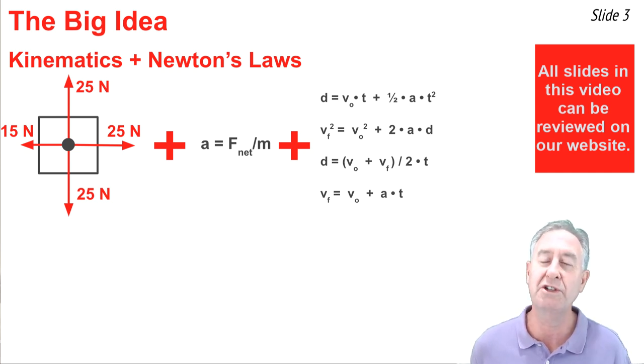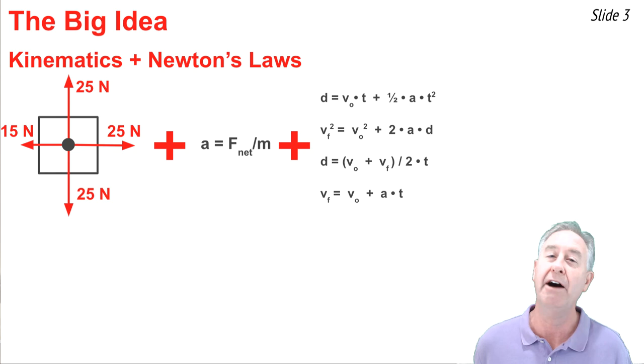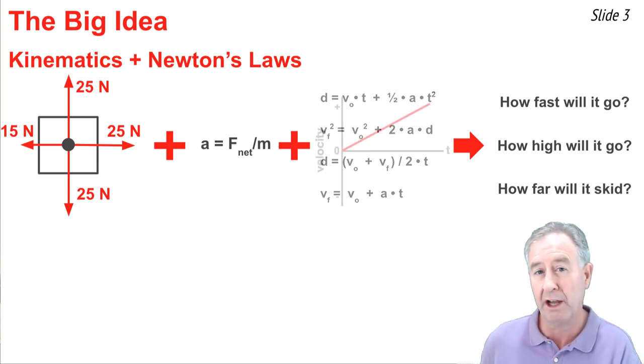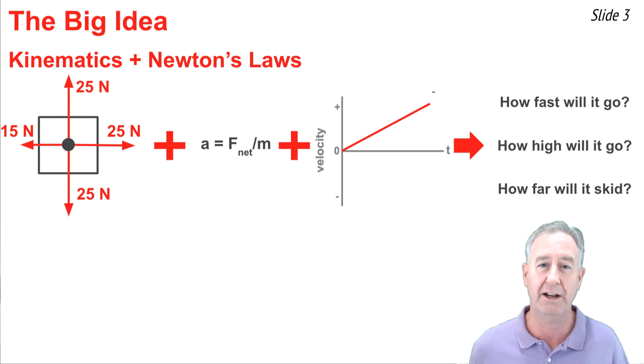We can use these two models in order to determine how fast an object will be going, how high it will go, and how far it will skid. Along the way, we may introduce several representations like velocity-time graphs, position-time graphs, and dot diagrams.